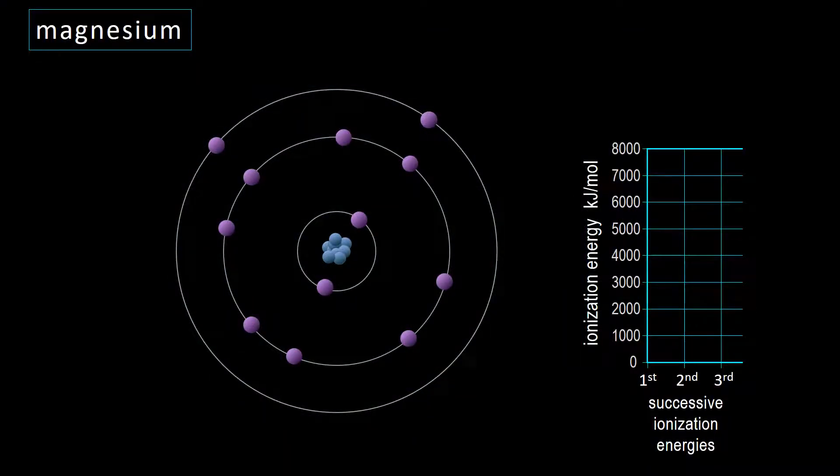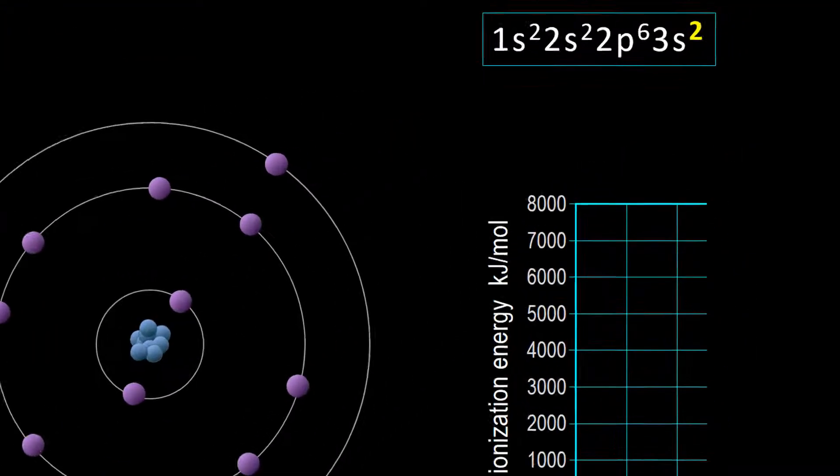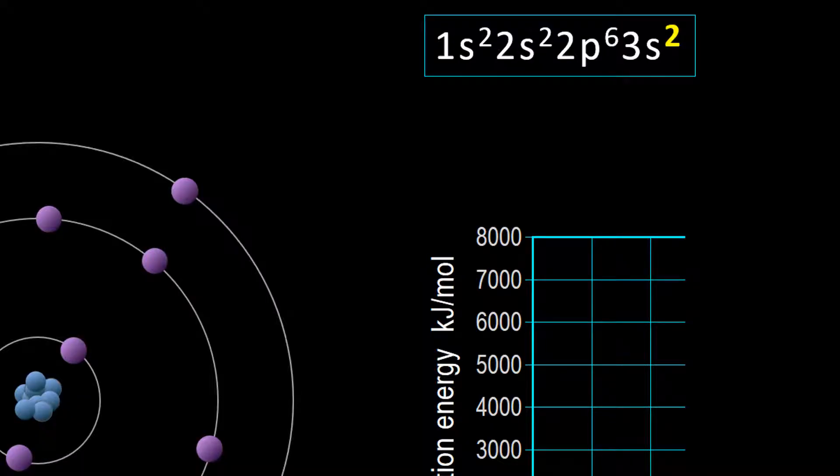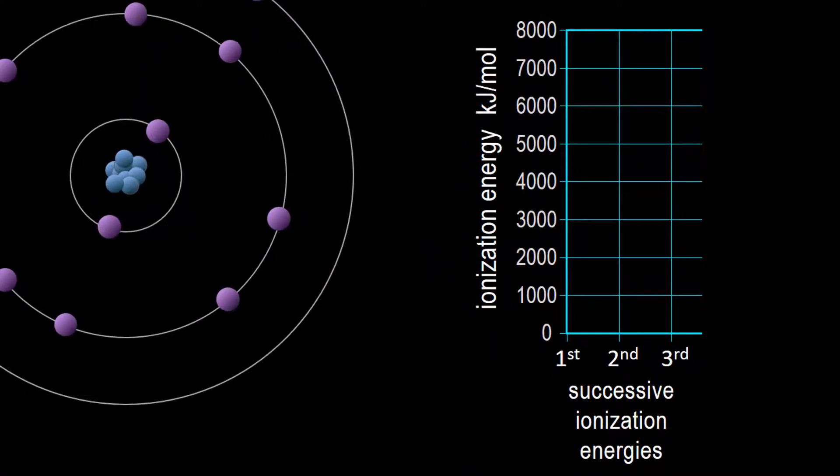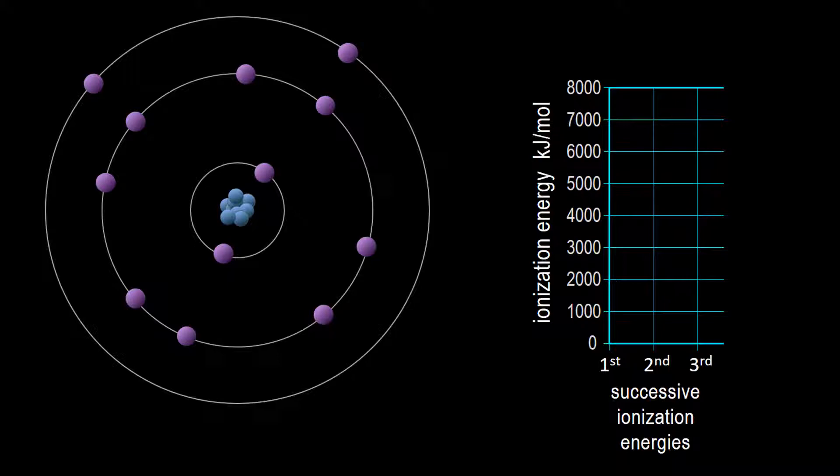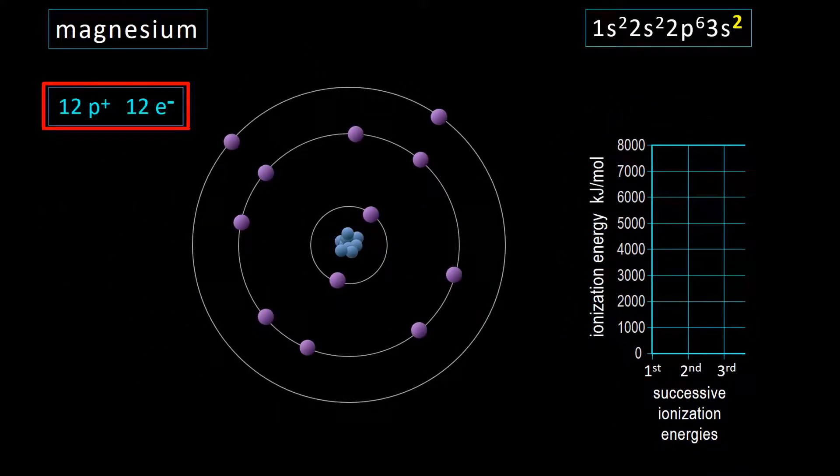Let's begin by taking a look at energies required to remove electrons from magnesium. The electron configuration is shown at top right, and we are keeping track of the ionization energy in the graph at bottom right. We see that neutral magnesium has 12 protons and 12 electrons.